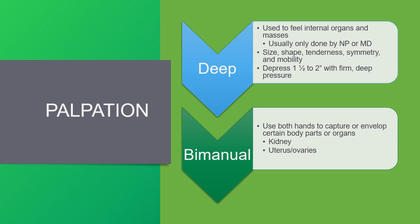Deep palpation is used to feel internal organs and masses, and usually this is only done by the NP or MD, or with special permission at the RN level, because if you are deeply palpating an organ that's at risk, you could cause internal bleeding or hemorrhage. Or if it's a tumor or some sort of cancer, you could cause spread of the disease. If you do perform deep palpation, you're depressing further — one half to two inches from deep pressure — and you're trying to feel the size, the shape, assess if there's tenderness, and look for symmetry and mobility of the object.